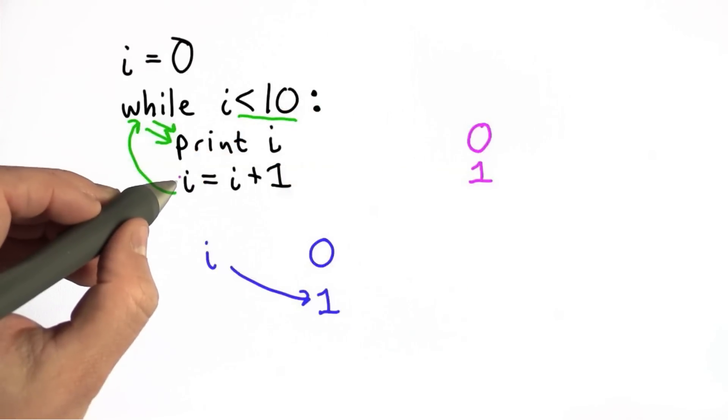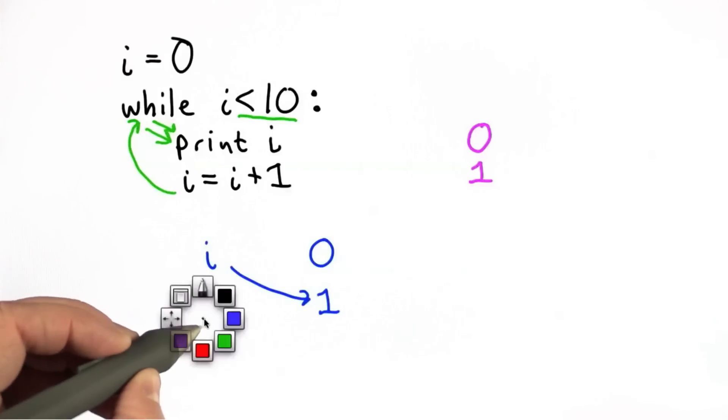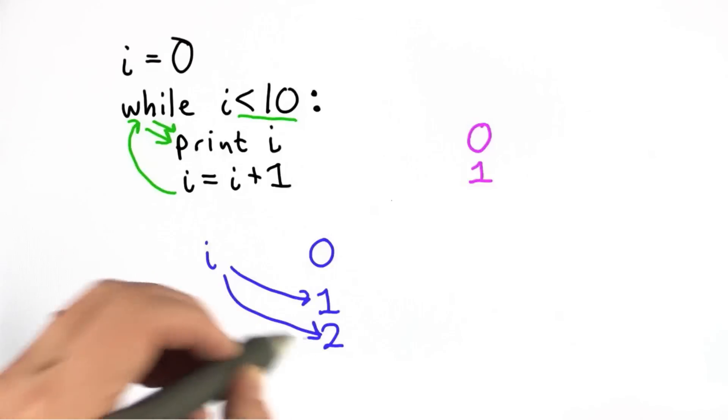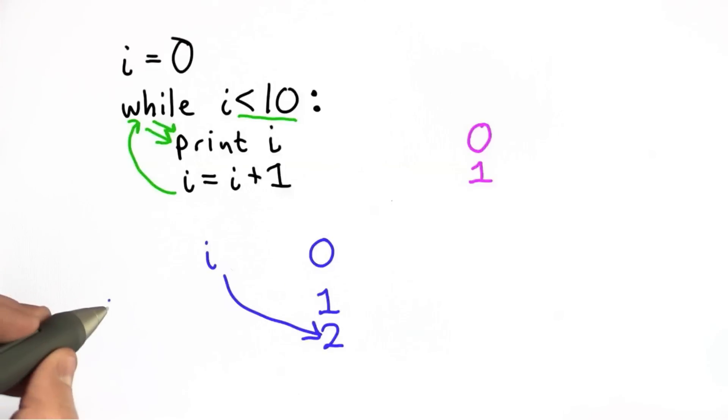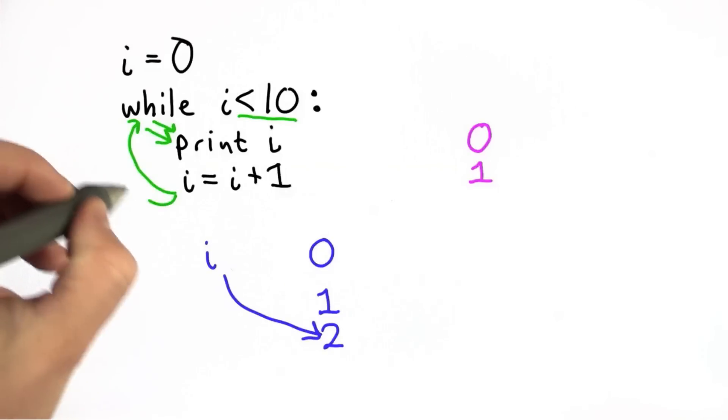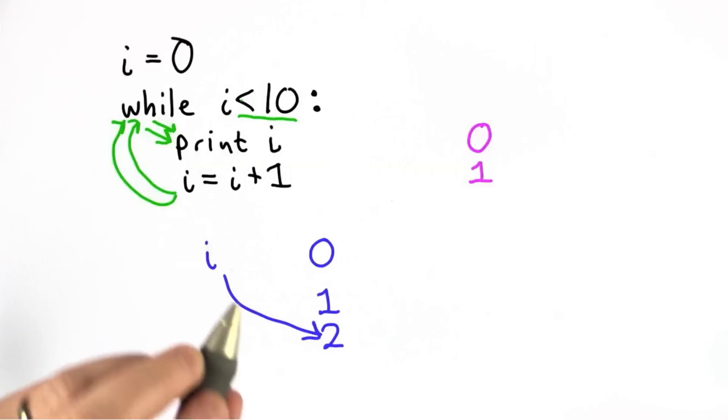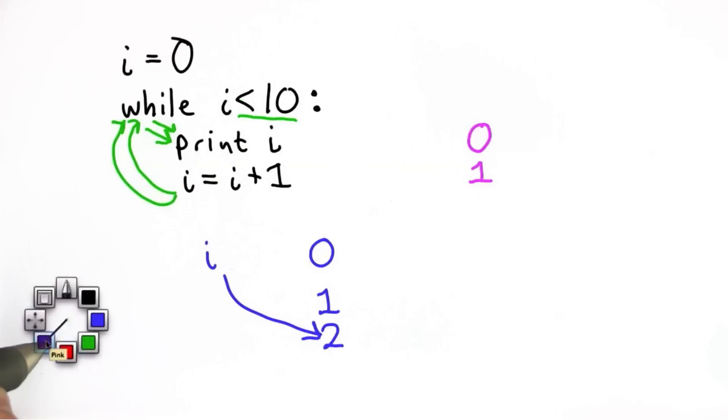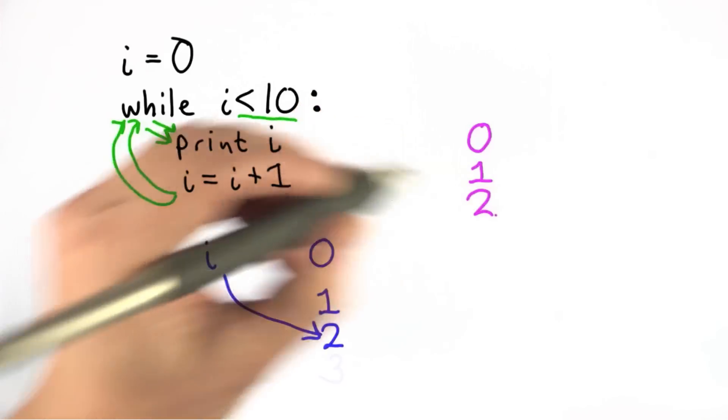Then we go to the next statement. Increase the value of i by 1. That's going to make the value of i 2. Now i refers to the number 2. Because it's a while, we keep going. We go back to the test expression. i is less than 10. Still less than 10 because now it's 2. We're going to print the 2. We're going to add 1. That'll make the value of i 3. And we're going to keep going.